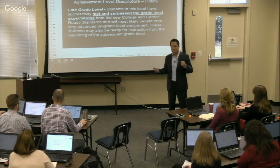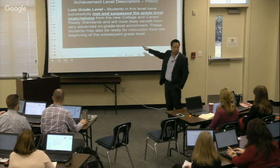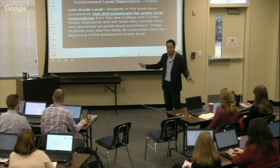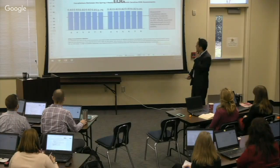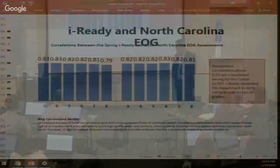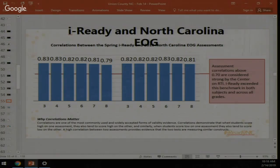A common misconception is that students must score 'late' at the end of the year. That's not the case — if you can get to mid on grade level at any point during the year, you are considered proficient. We verify this through linking studies: we looked at students who took three iReady diagnostics and the North Carolina End-of-Grade assessment at the end of the year, and the correlations between the two tests were relatively high — 0.83, 0.83, 0.82, and so on.